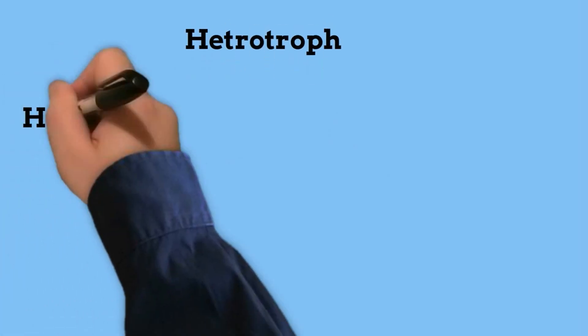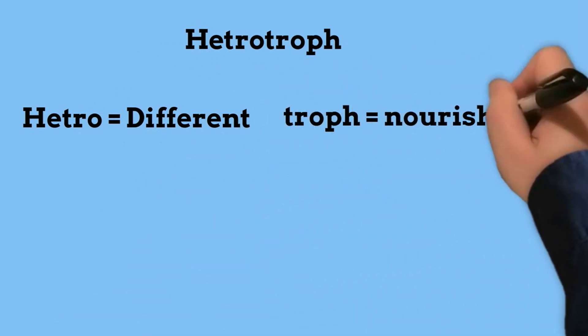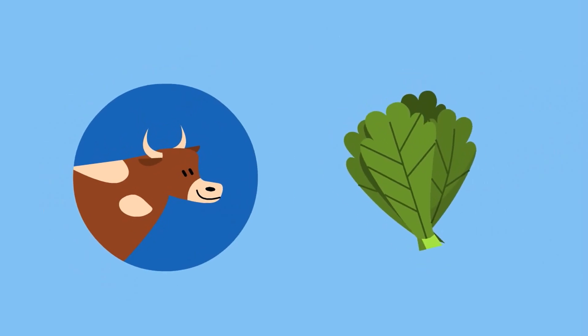A heterotroph comes from the Greek word 'heteros' meaning another or different, and 'troph' meaning nutrition or nourishing. A heterotroph has to get their energy by eating other plants, animals, or by decomposing.